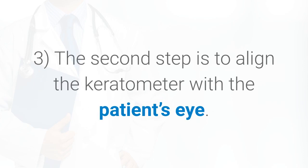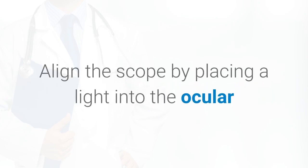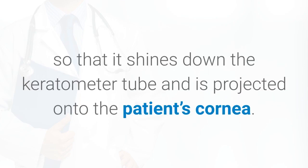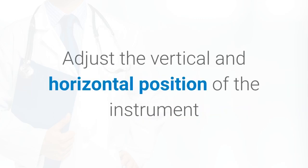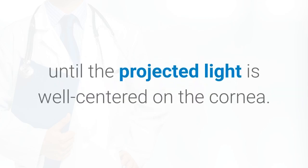3. The second step is to align the keratometer with the patient's eye. Occlude the non-examined eye. Align the scope by placing a light into the ocular so that it shines down the keratometer tube and is projected onto the patient's cornea. Adjust the vertical and horizontal position of the instrument until the projected light is well centered on the cornea.